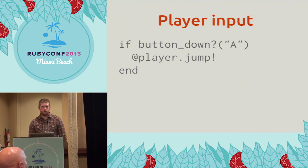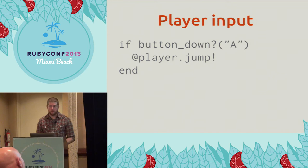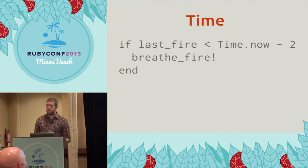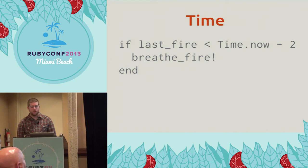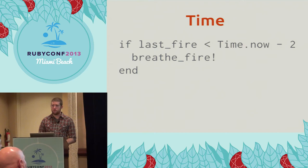User input is also a huge factor during the update step. Maybe your user presses A and that causes their character to jump. Timing is also something you use during the game loop to cause things to happen. So if you have a fire-breathing turtle that's supposed to spit a fireball every two seconds, every time through the game loop you can check: is the last time I spat fire more than two seconds ago? If so, spit fire — and that will give you a nice fireball coming out every two seconds.